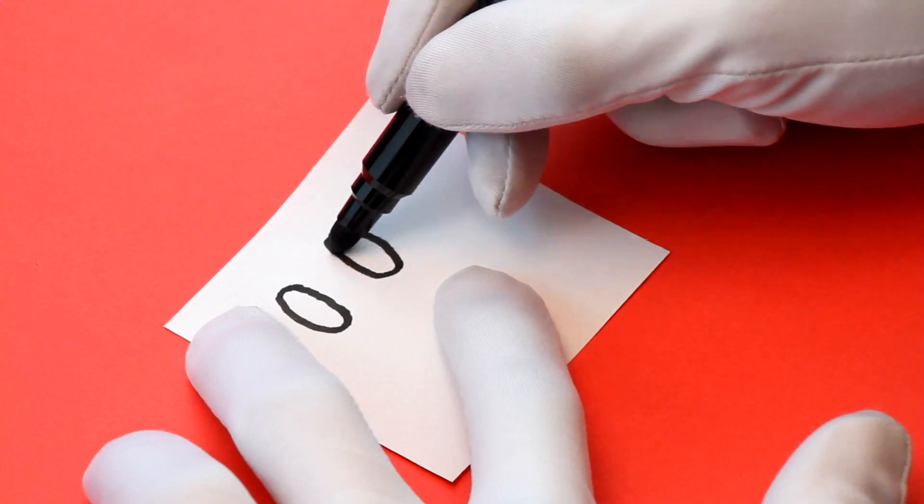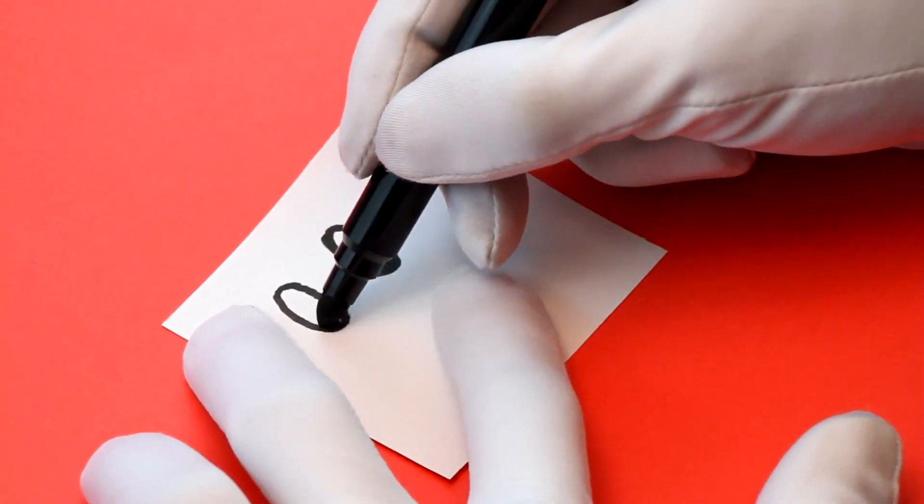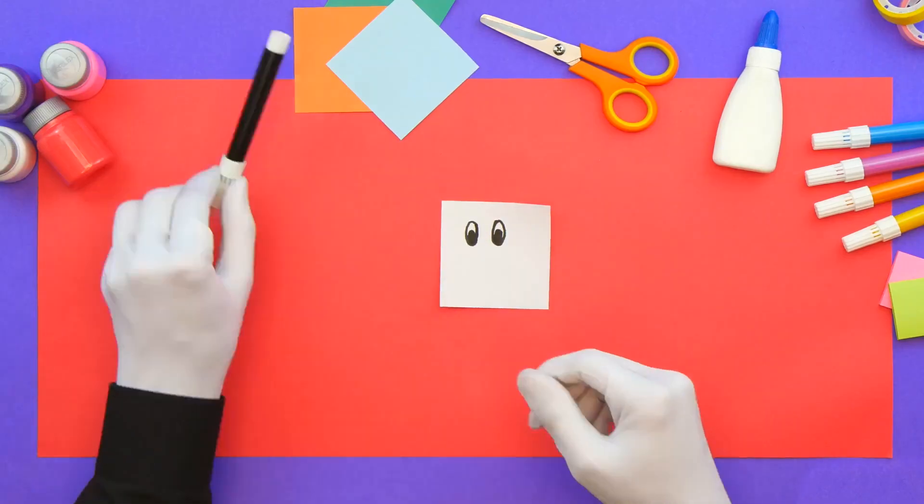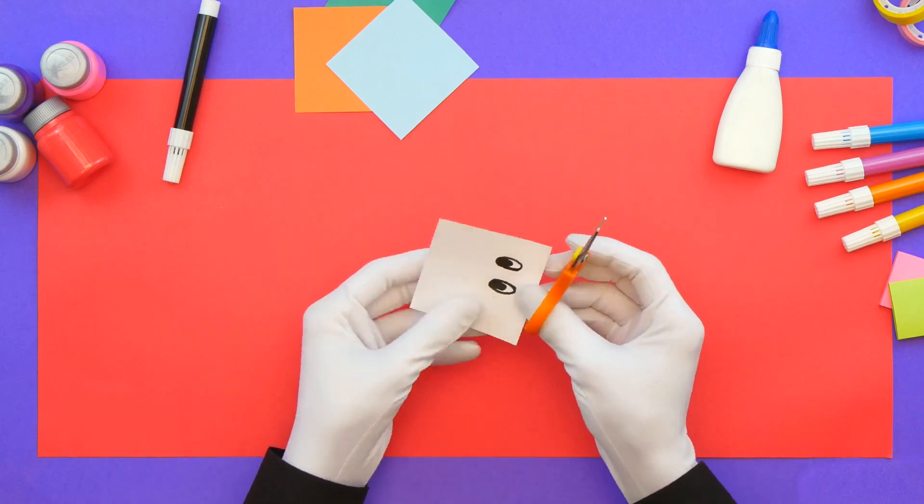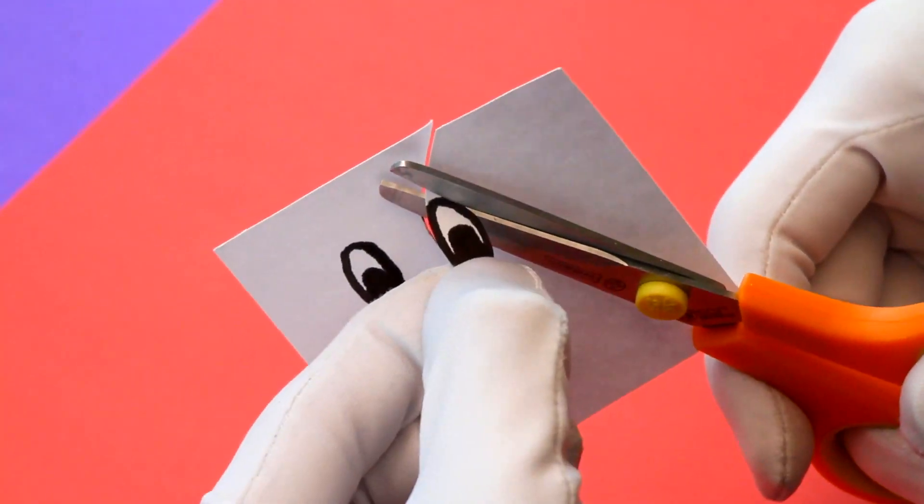Let the paint dry for a little bit. Meanwhile, let's make the details of our centipede. On white paper, draw the eyes and cut them.